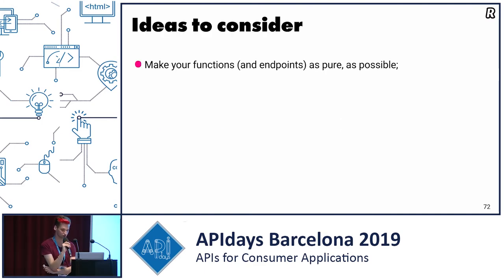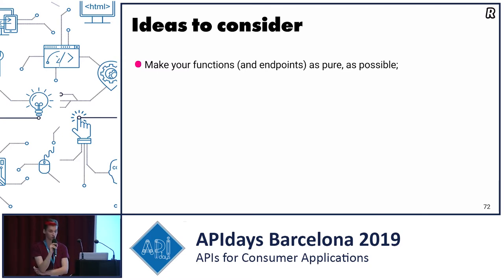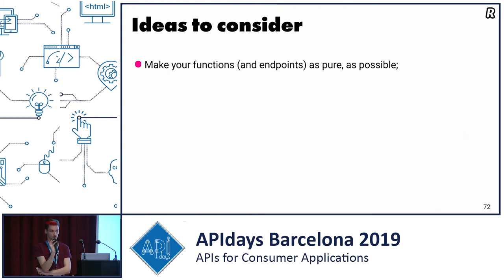Ideas to consider as a result: try to make your functions and endpoints as pure as possible. It's a bit hard, but there are methodologies for it. For example, CQRS is kind of about this — separating reads from writes. It's an obvious thing, but if you think about it from a functional programming point of view, you see the benefits: it's easy to scale, easy to test. Even when not thinking at endpoint level, when writing any function, just think: do I need this external state change here? Maybe I don't. Maybe I can write the function without it and it will be the same. If you can, now you have a function that's much easier to test and scale.